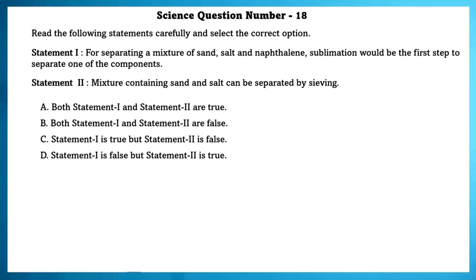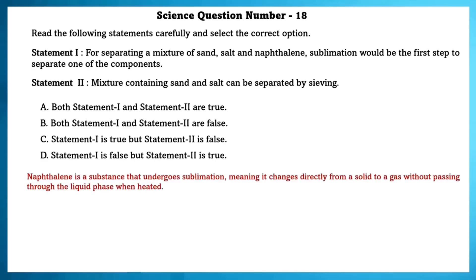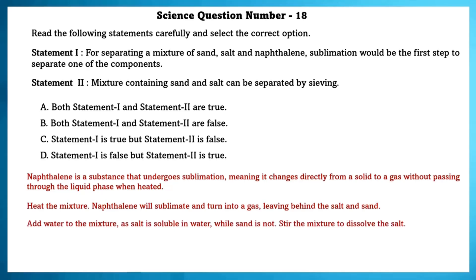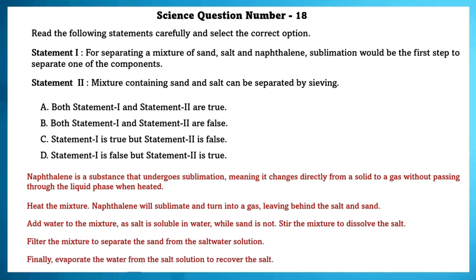Science question number 18. For separating a mixture of sand, salt and naphthalene, sublimation would be the first step. Naphthalene undergoes sublimation — it changes directly from solid to gas without passing through the liquid phase when heated. Heating causes naphthalene to sublimate, leaving behind salt and sand. Then add water: salt is soluble while sand is not. Filter the mixture to separate sand from the salt-water solution. Finally, evaporate the water from the salt solution to recover the salt. Statement 2 — that a mixture of salt and sand can be separated by sieving — is wrong. So statement 1 is true but statement 2 is false.